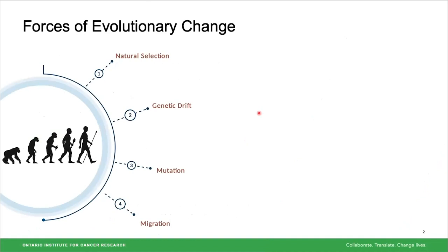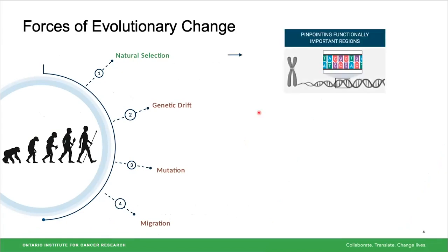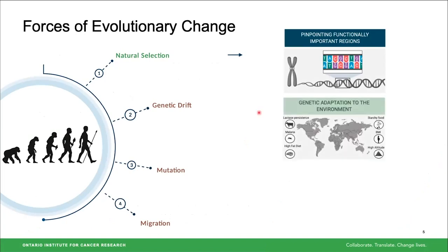We have natural selection, genetic drift, mutation, and migration. I'm particularly interested in natural selection because it's been really important for many areas of research, including human genetics — to pinpoint functionally important regions of our genome, for adaptation to different environments around the world, and for the frequency and intensity of many diseases.